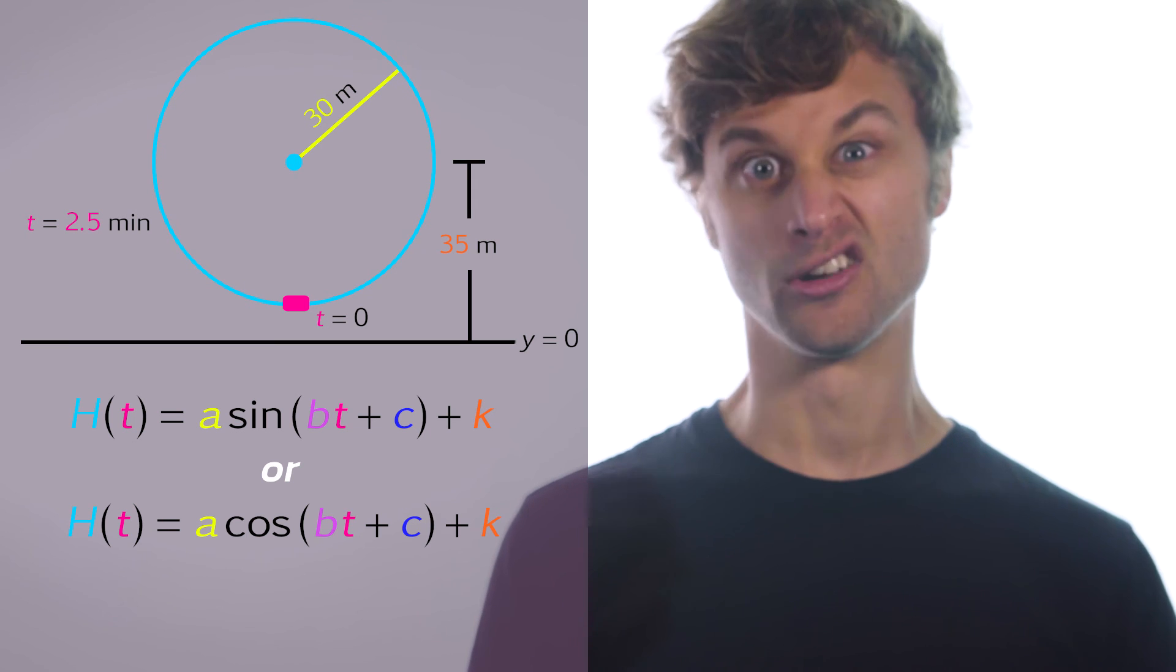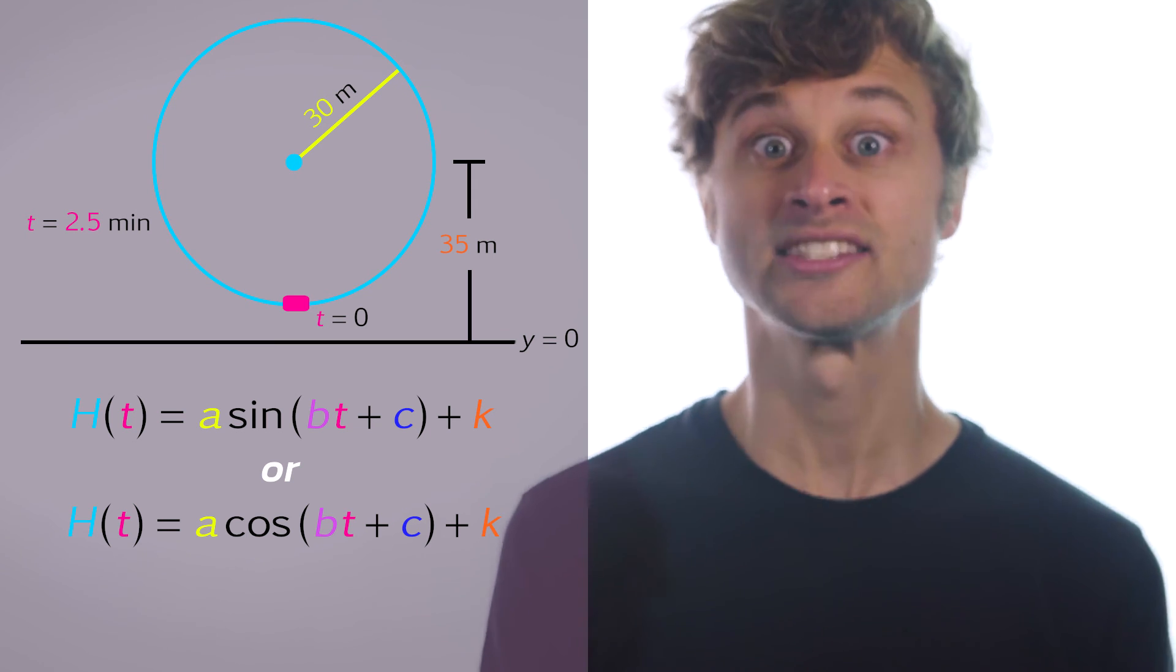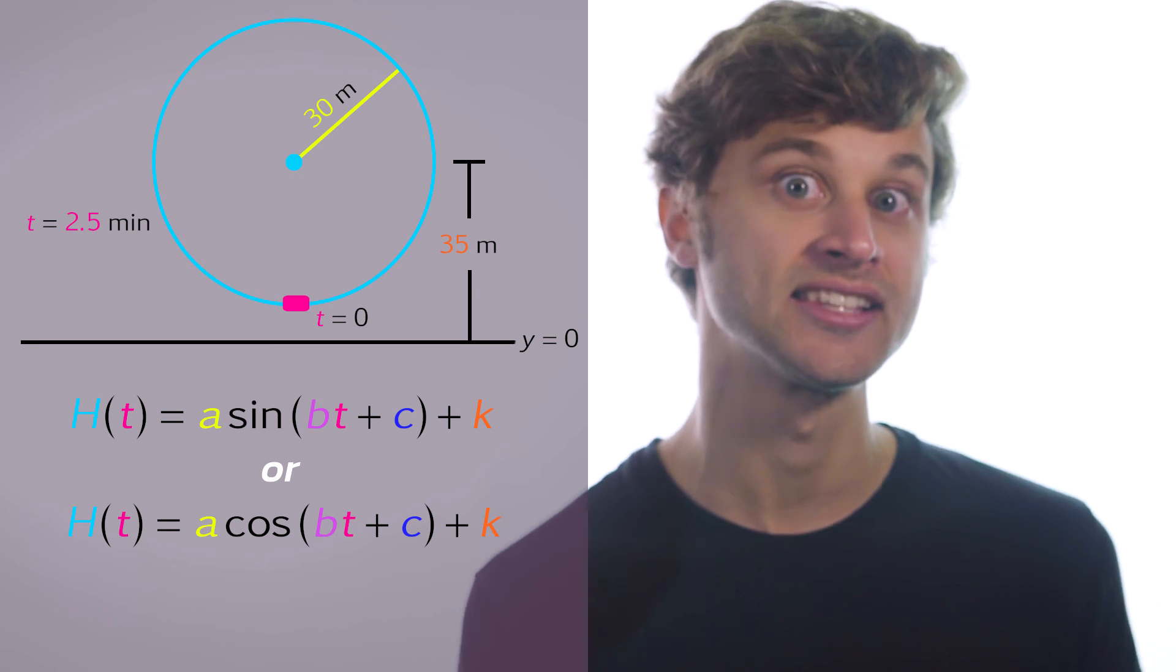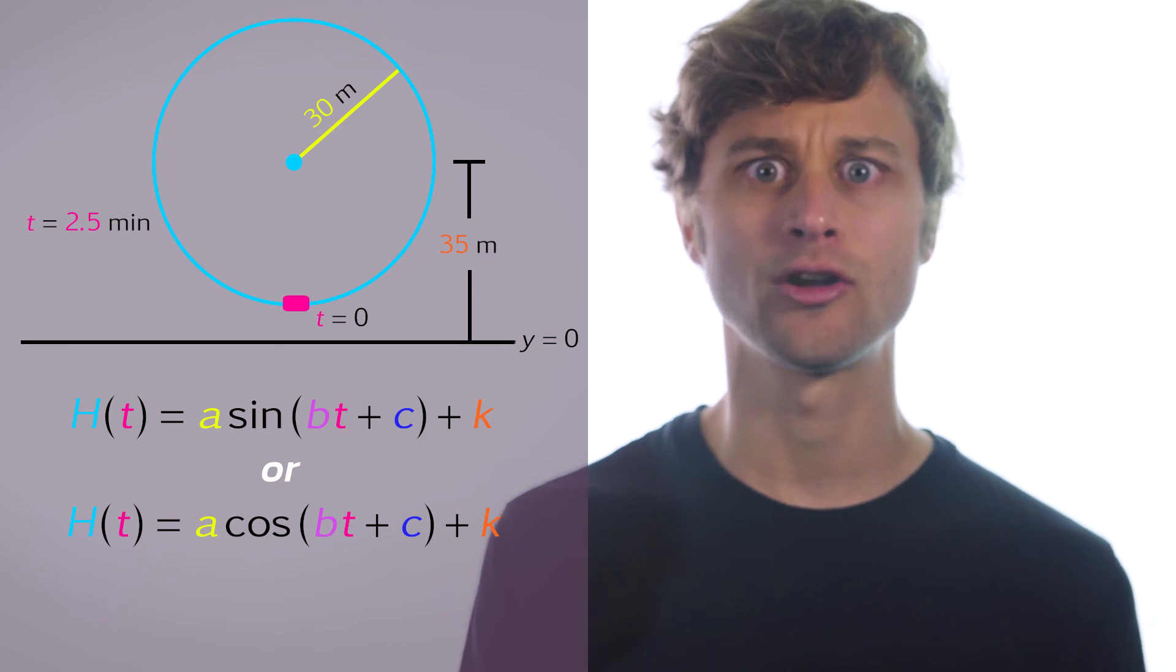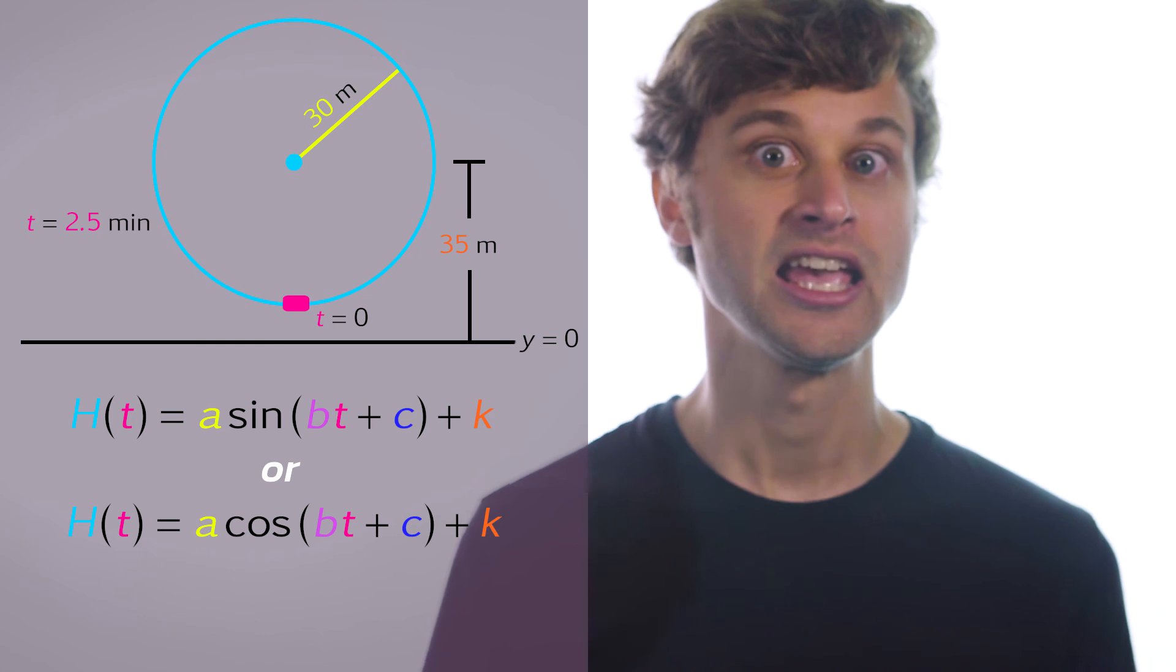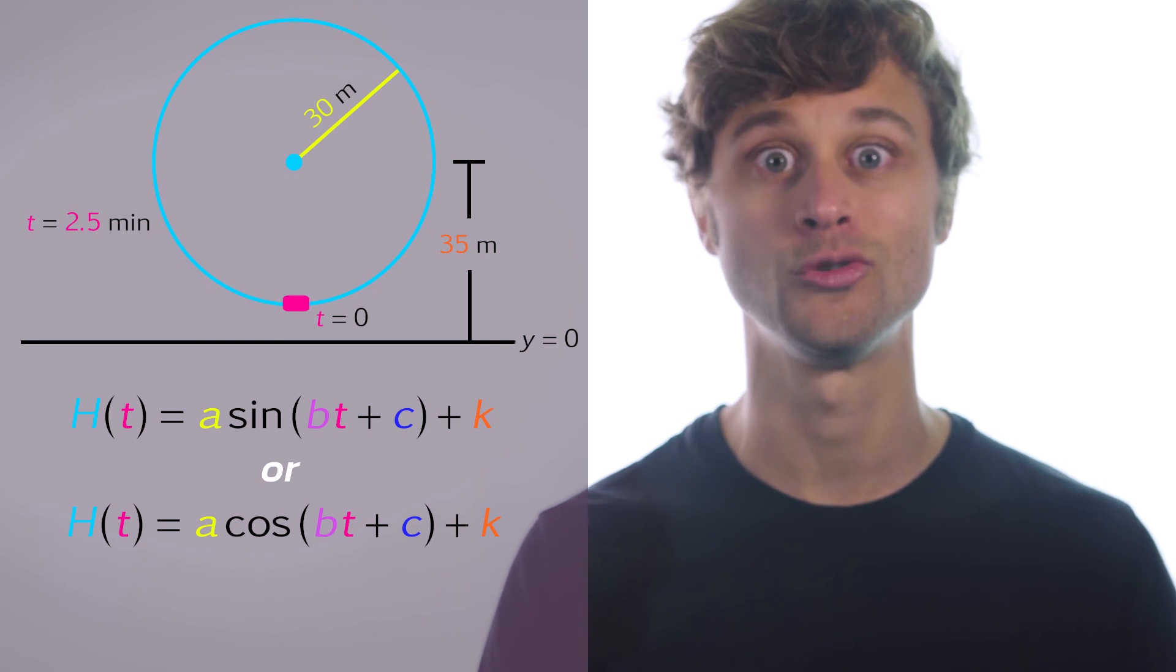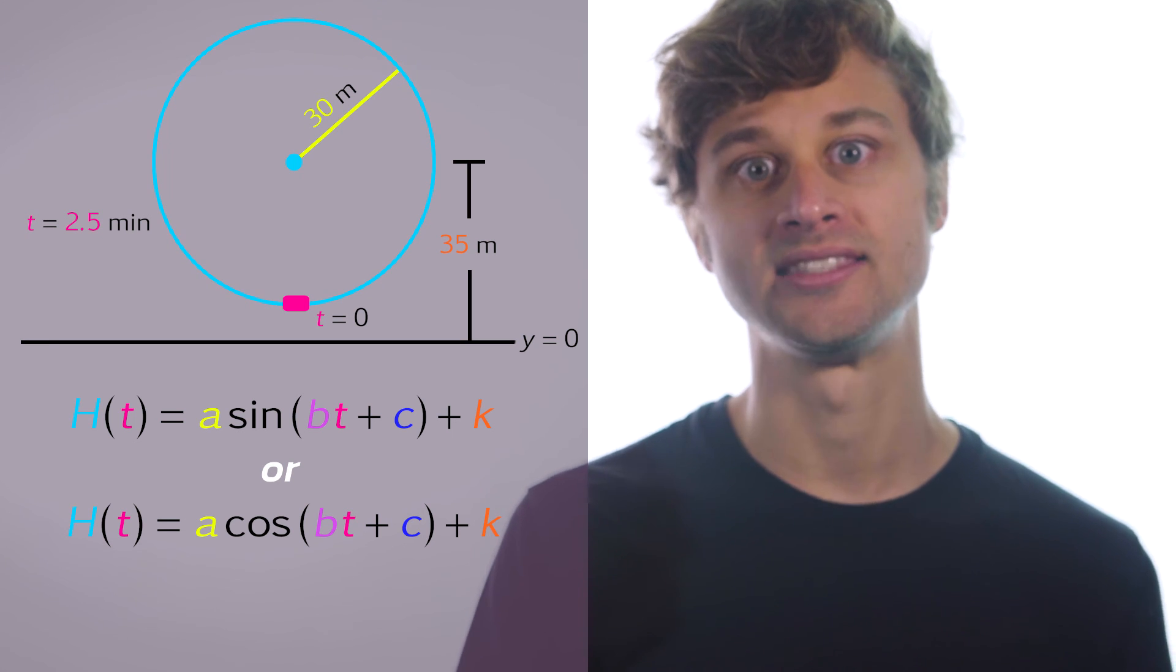So remember that sine and cosine are just translations of each other. I can get sine by translating cosine left or right and vice versa, so it doesn't really matter which one we choose. But one is going to be more convenient to use. If I choose the wrong one, all I'm going to do is end up with a c term that is non-zero.